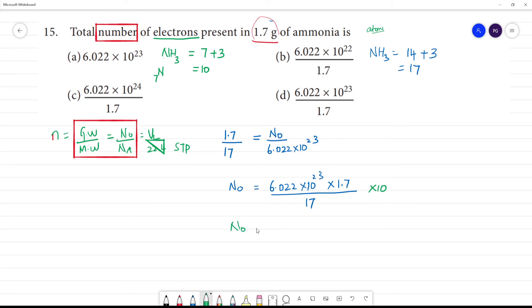N0 is equal to 1.7 times 10 times 6.022 times 10 to the power 23 divided by 17. Cancel 17, and we get 6.022 times 10 to the power 23. Clear.